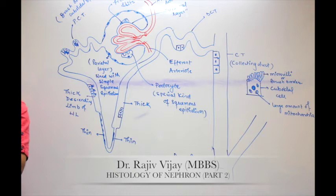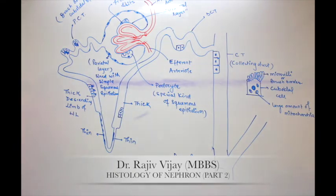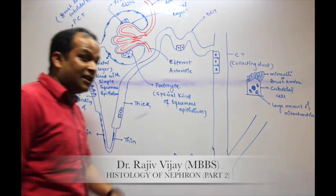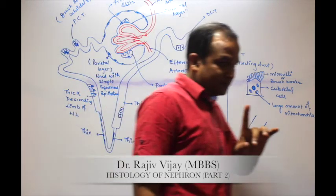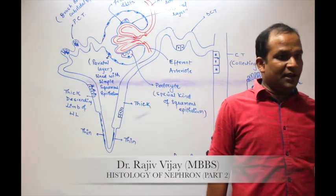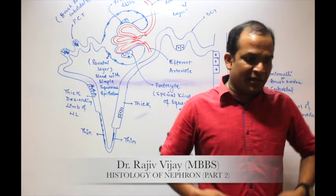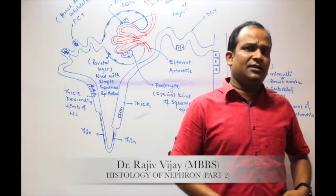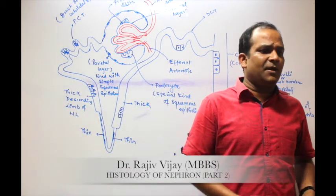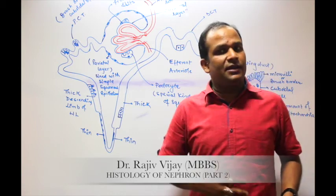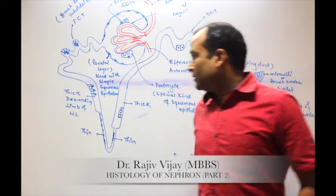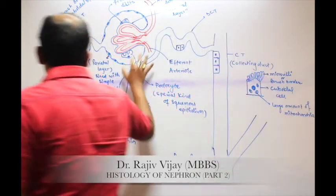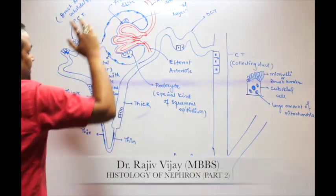Just as we have read that transitional epithelium is characteristic of the urinary tract — urinary bladder, urethra, and proximal part of the ureter — likewise, podocytes are found only in the kidney.